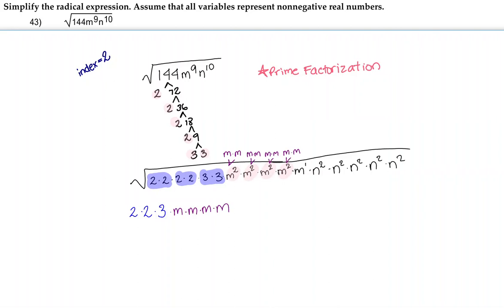The same thing goes for the n's. The n's can be rewritten as n times n, so we can take out five groups of n's.